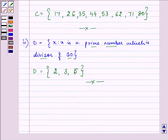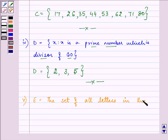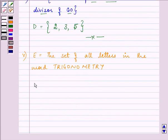So the next part says E is the set of all letters in the word trigonometry. Now here we'll be listing the words closed in braces, but remember that once you have written an element it will not get repeated.